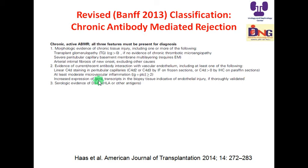According to the revised Banff 2013 classification, as with acute antibody-mediated rejection, three criteria must be fulfilled: morphology, evidence of current or recent antibody interaction with vascular endothelium, and serological evidence of donor-specific antibodies. For chronic AMR, morphology includes transplant glomerulopathy (CG > 0) if no evidence of chronic thrombotic microangiopathy, severe peritubular capillary basement membrane multilayering, or arterial intimal fibrosis of new onset excluding other causes.